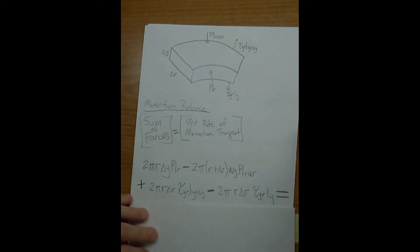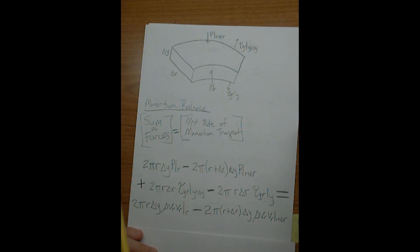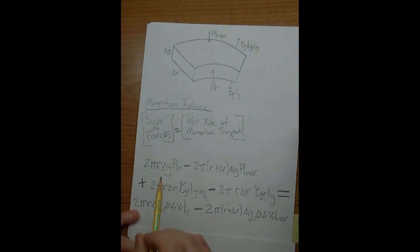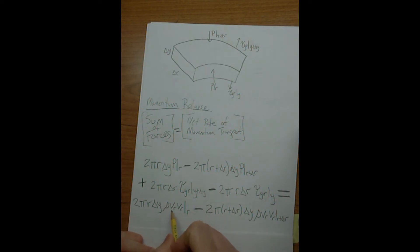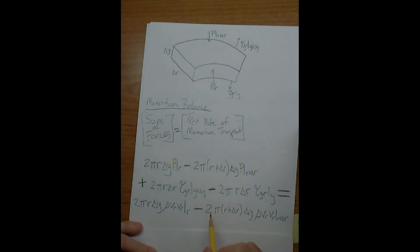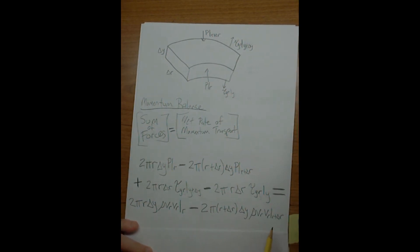Now let's look at the net rate of momentum transport. We consider the momentum going into the control volume and the momentum leaving. The momentum going in passes through surface area 2 pi r delta y, giving rho Vr times Vr at r. The rate of momentum leaving passes through the surface area 2 pi times r plus delta r times delta y, giving rho Vr times Vr at r plus delta r. So that's our total momentum balance.